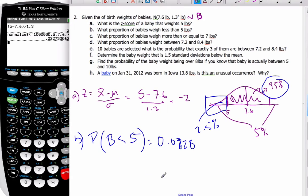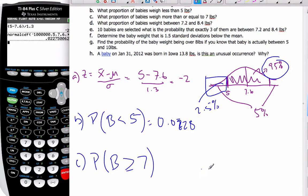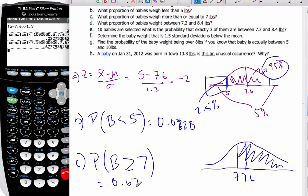Part C says, what's the proportion of babies more than or equal to 7 pounds? I want the probability that babies are more than or equal to 7 pounds. If I look at this normal curve, here's my mean of 7.6, here is 7, so I want all this area here. I can go to my calculator, normal CDF, from 7 up to a big number.